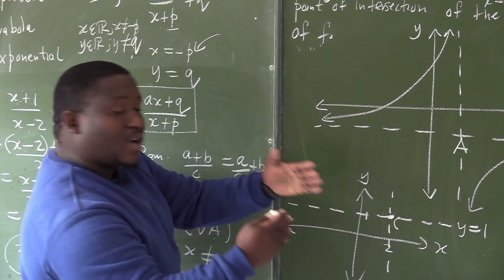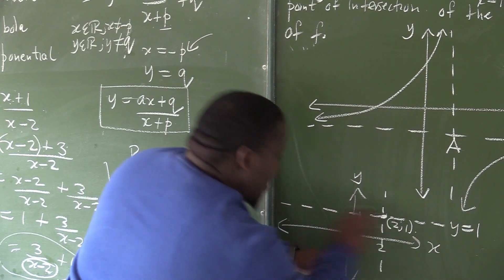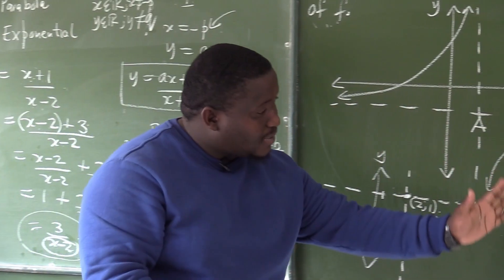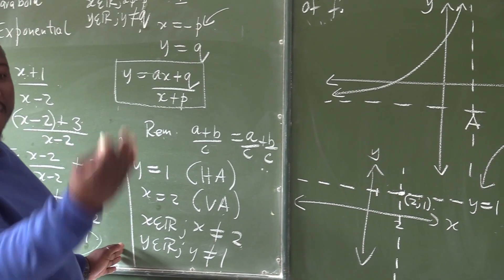To this point, Y cannot be equal to the horizontal asymptote 1, but can be equal to other values like 2 or 1.1. To find the X intercept, we make Y equal to 0. To find the Y intercept, we make X equal to 0.